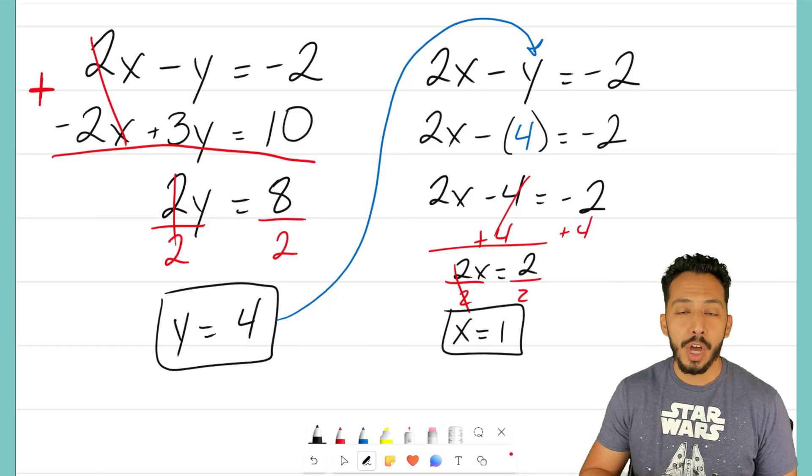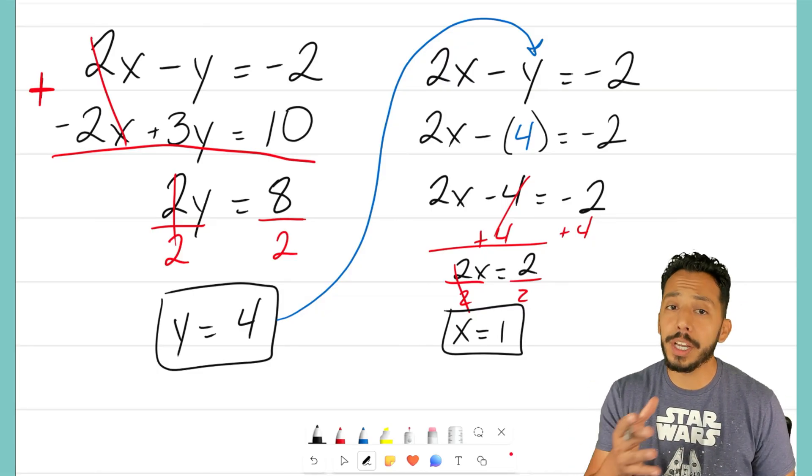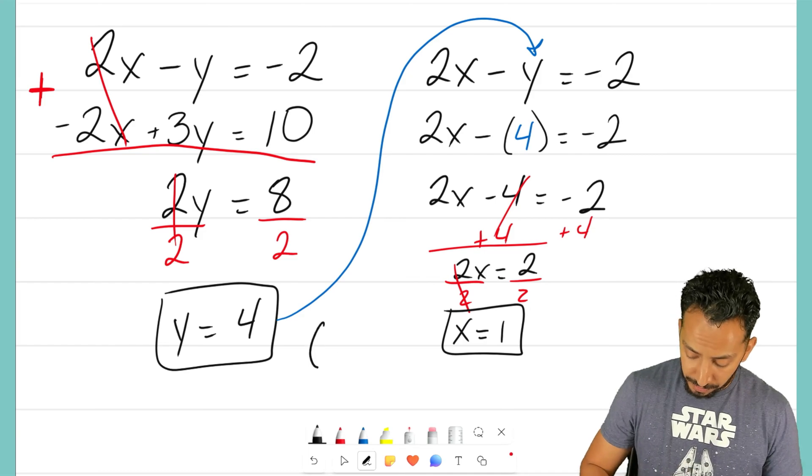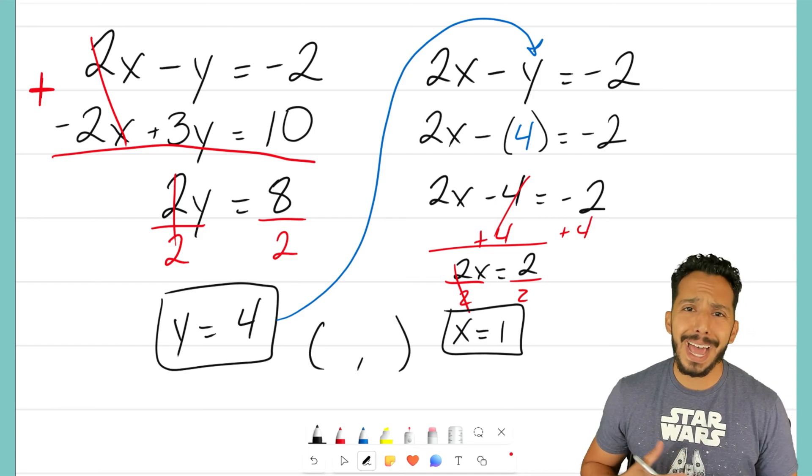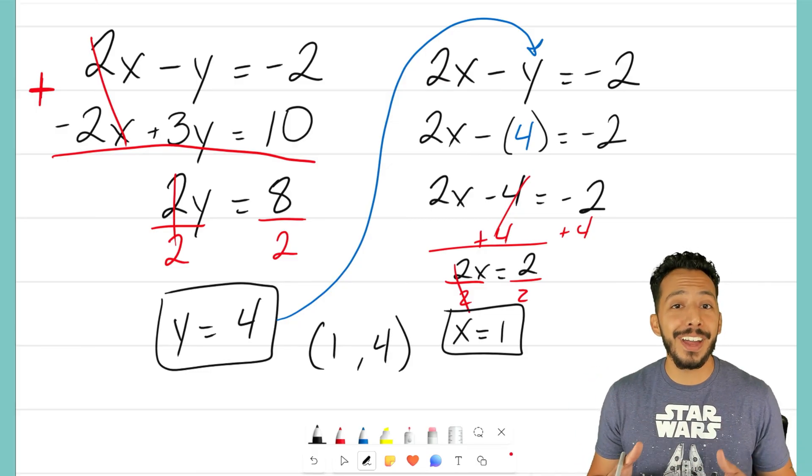So, don't forget, when you solve for one variable, you've got to solve for the other variable. We have our x is 1, our y is 4. The very last step is to write that as an ordered pair, 1, 4. Remember, it goes x, y, and there it is.